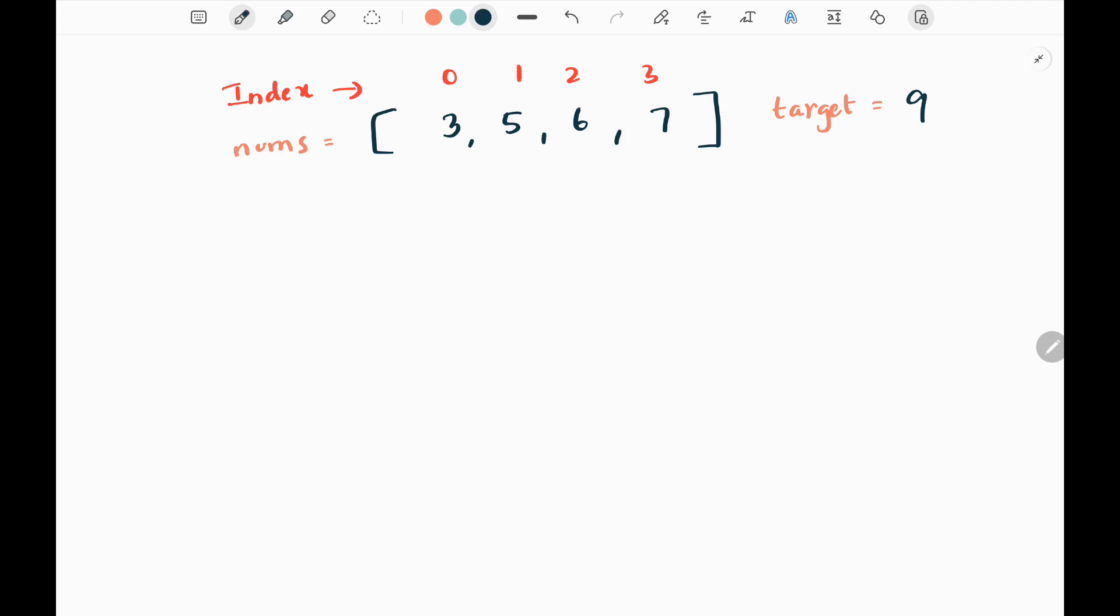In this problem we are given nums array and the target variable. Initially I will sort the input array. Here I have already picked the sorted input array. Then I will be having left and right pointers. Here we are going to have the minimum value in the left pointer and the maximum value in the right pointer. Since we have sorted the input array,